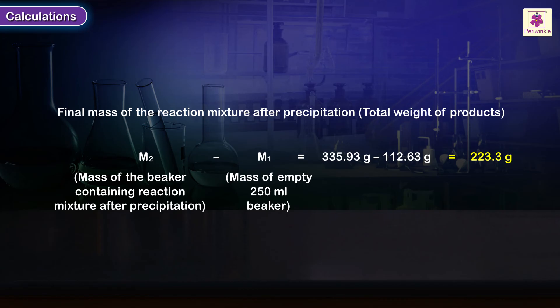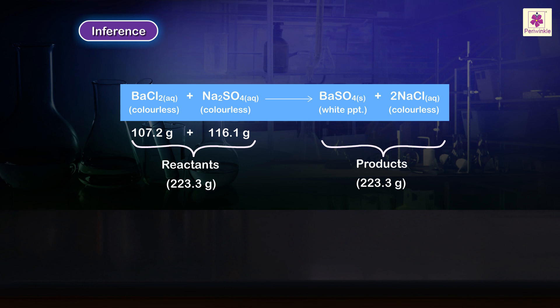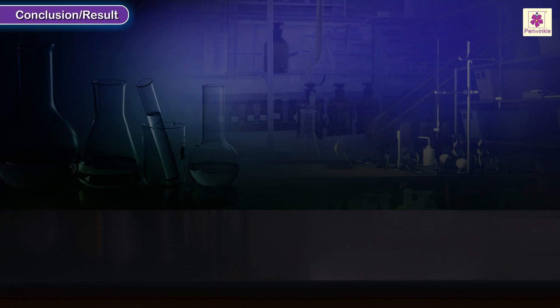Inference: On comparing the total mass of reactants before the precipitation and the final mass of the reaction mixture after the precipitation, we see that the total mass of reactants is almost equal to the total mass of products. This shows that mass is conserved during a chemical reaction.